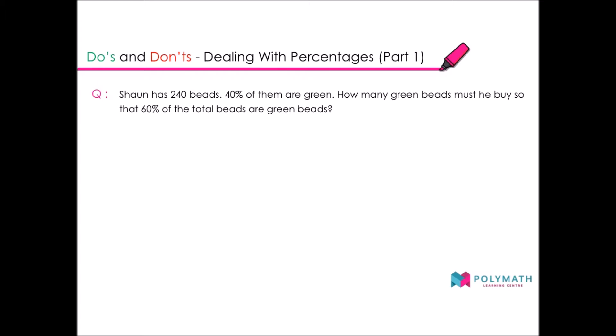Welcome to another video tutorial from Polymath Learning Center. Today we are going to teach you the do's and don'ts when dealing with percentages. The question is: Sean has 240 beads, 40% of them are green. How many green beads must he buy so that 60% of the total beads are green beads?